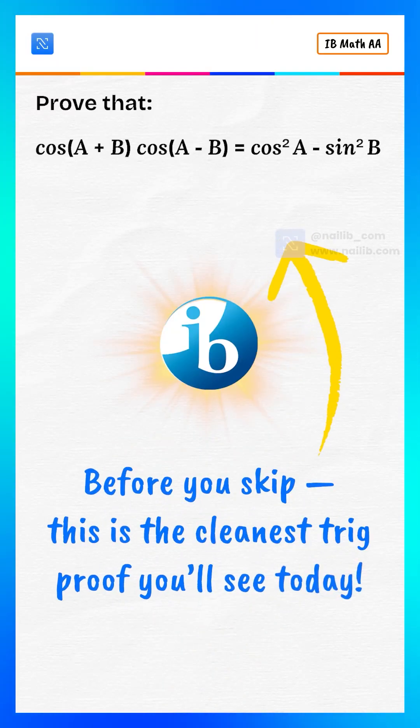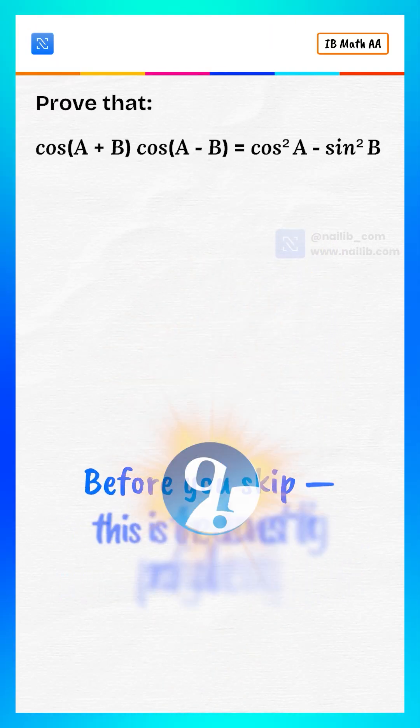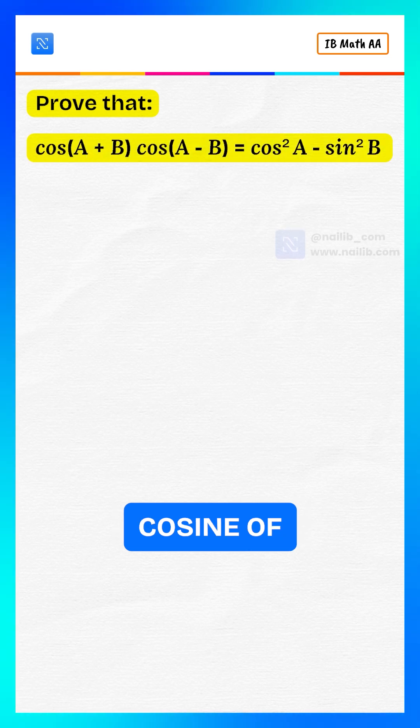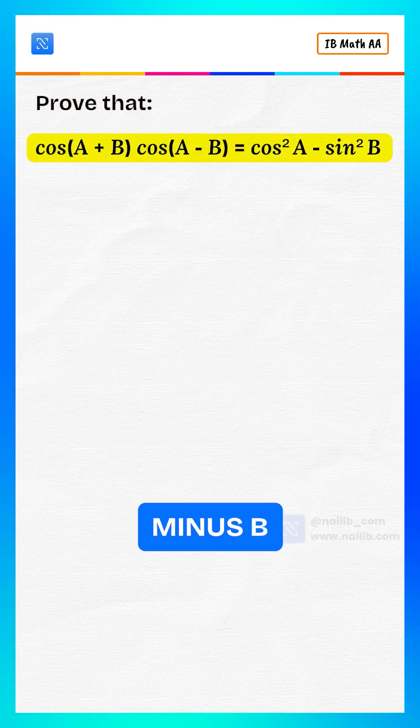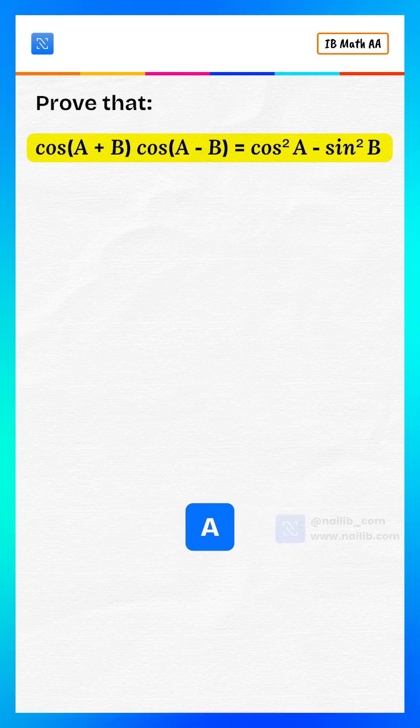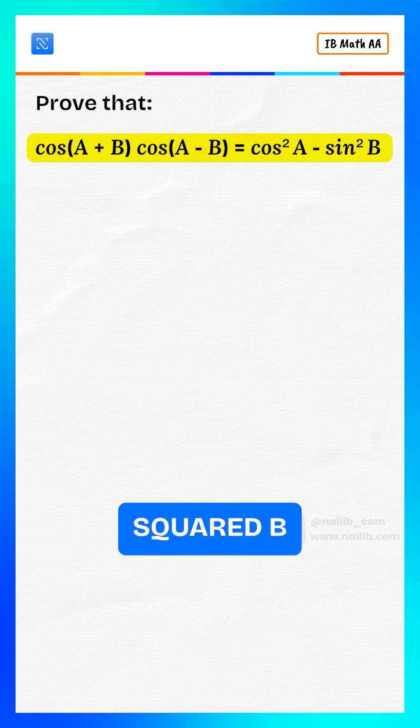Before you skip, this is the cleanest trig proof you'll see today. Prove that cosine of A plus B multiplied by cosine of A minus B equals cosine squared A minus sine squared B.